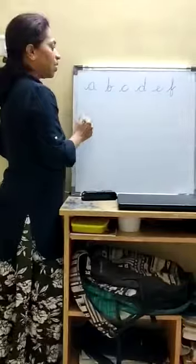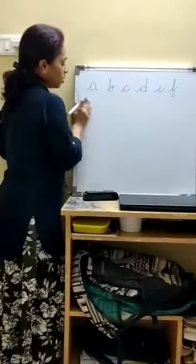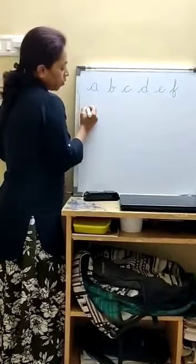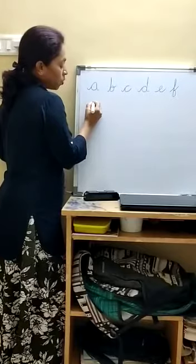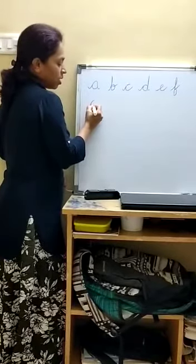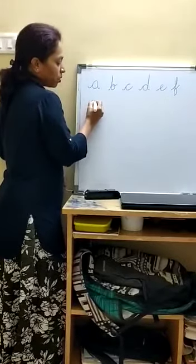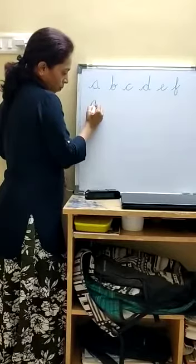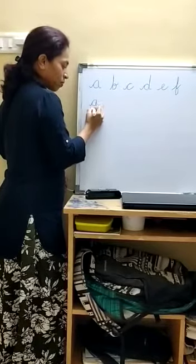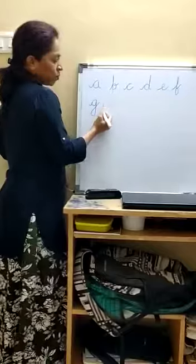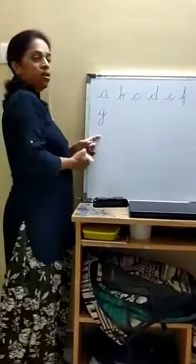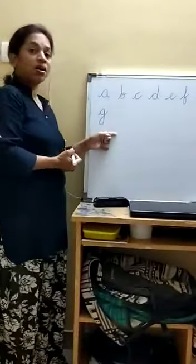Next letter is G. G says G. How to write? Take a small tail, go to the second line, come back to the third line, go up, come back to the fourth line, and then G. G. Girl. G. Gate.